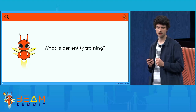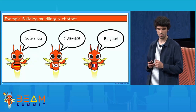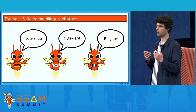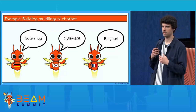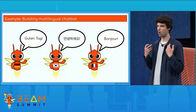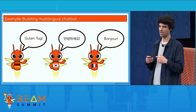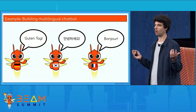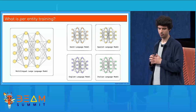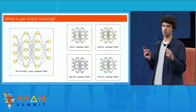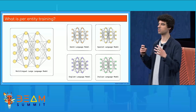So what does per-entity training actually mean? Imagine you're working for a big company that has a webshop selling goods to people all over the world, and you're given the task to build a chatbot able to support people in their own native language. You could just use a really big LLM — like ChatGPT — that serves all languages and call it a day. Or you could go for a per-entity training approach where you train a model for Dutch, for Spanish, for Italian, and you'll be able to use a smaller, simpler model because you don't have to train it on data of all languages.